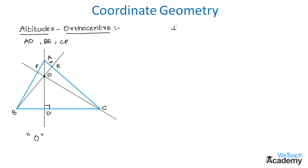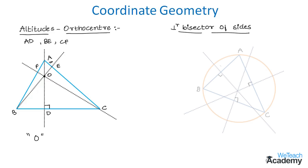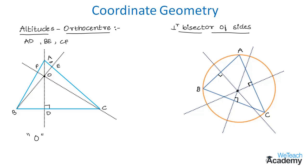Now let us discuss the perpendicular bisectors of the sides. In triangle ABC, the perpendicular bisectors of sides AB, AC, and BC are drawn. The point of concurrency of these bisectors is called the circumcenter of the triangle, denoted by S. The circumcenter S is equidistant from all vertices of the triangle, and the common distance is the circumradius, denoted by R.